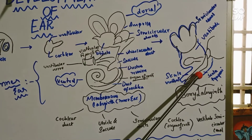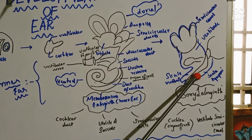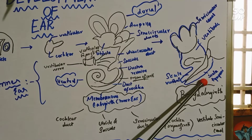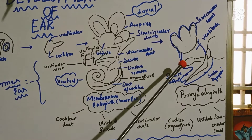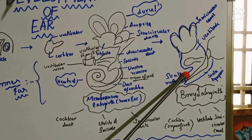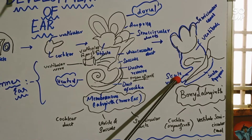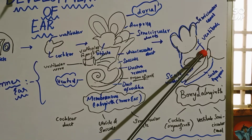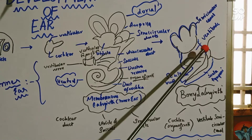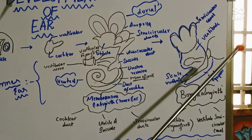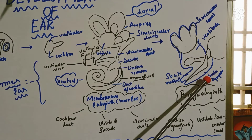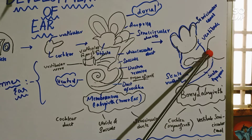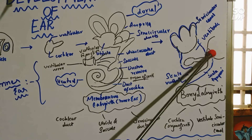On either side of the cochlear duct, we can see the scala tympani and the scala vestibuli. The scala vestibuli is continuous with the vestibule, which is a part of the bony labyrinth. And the scala tympani is continuous with the tympanic membrane.